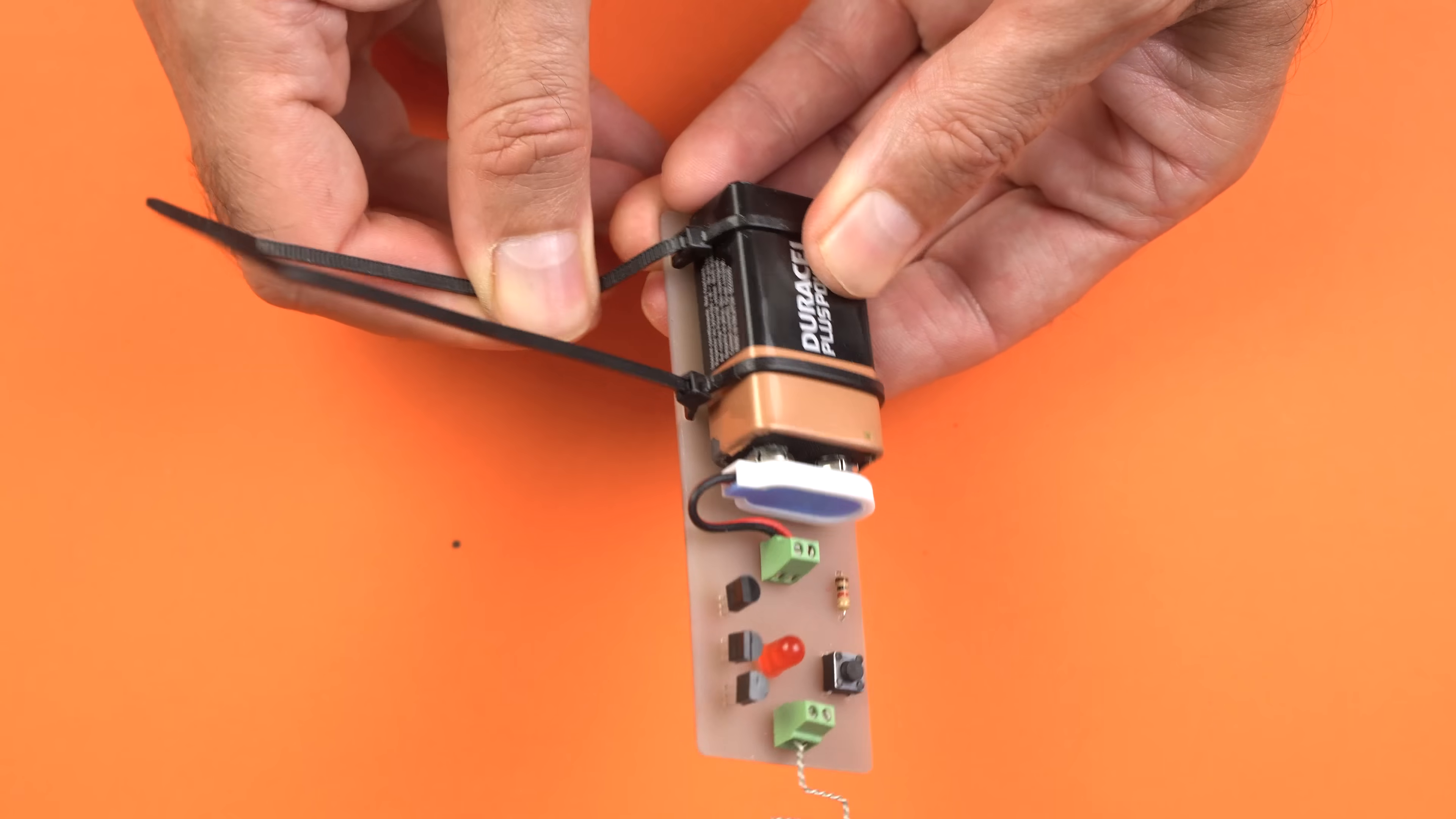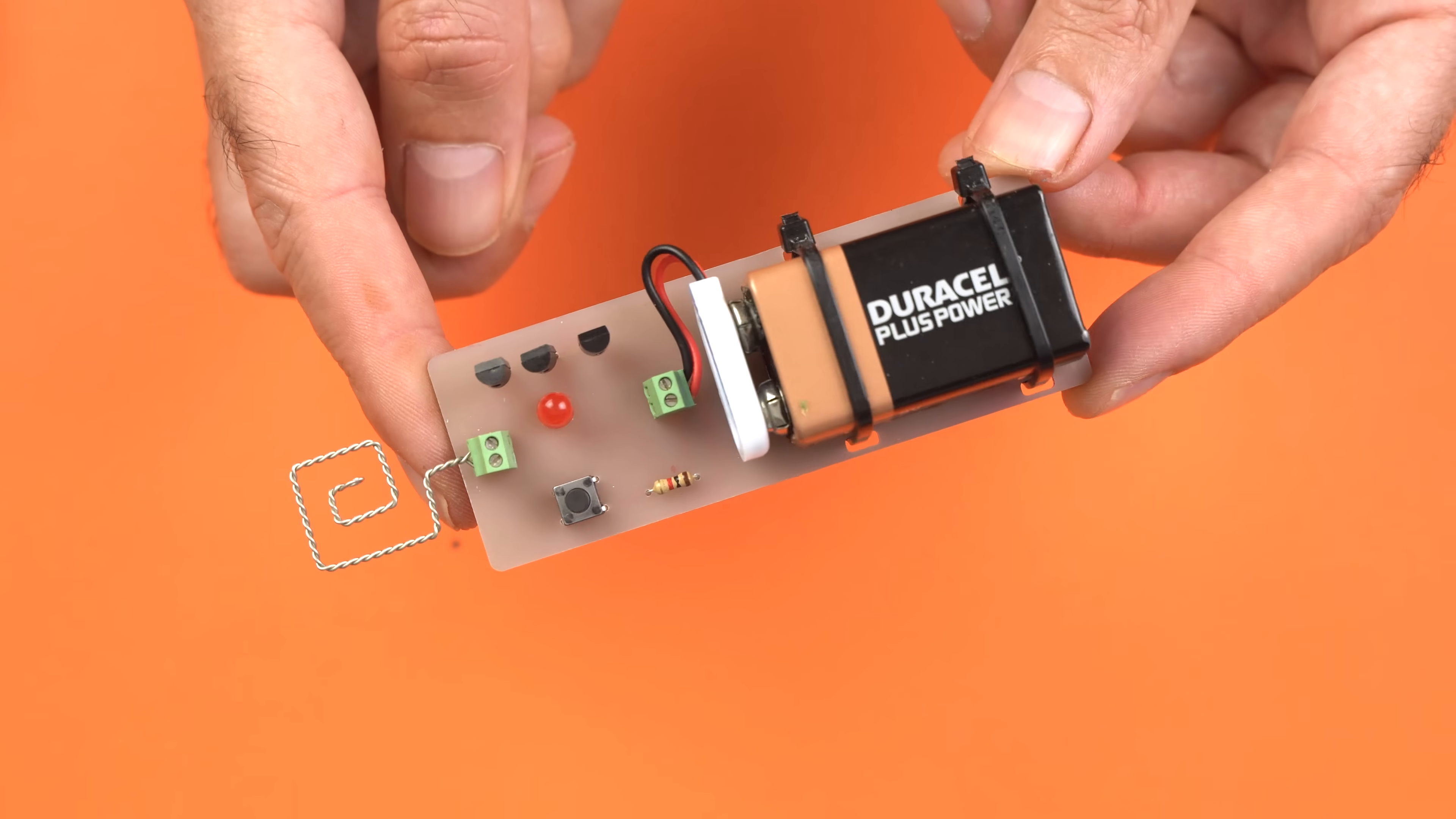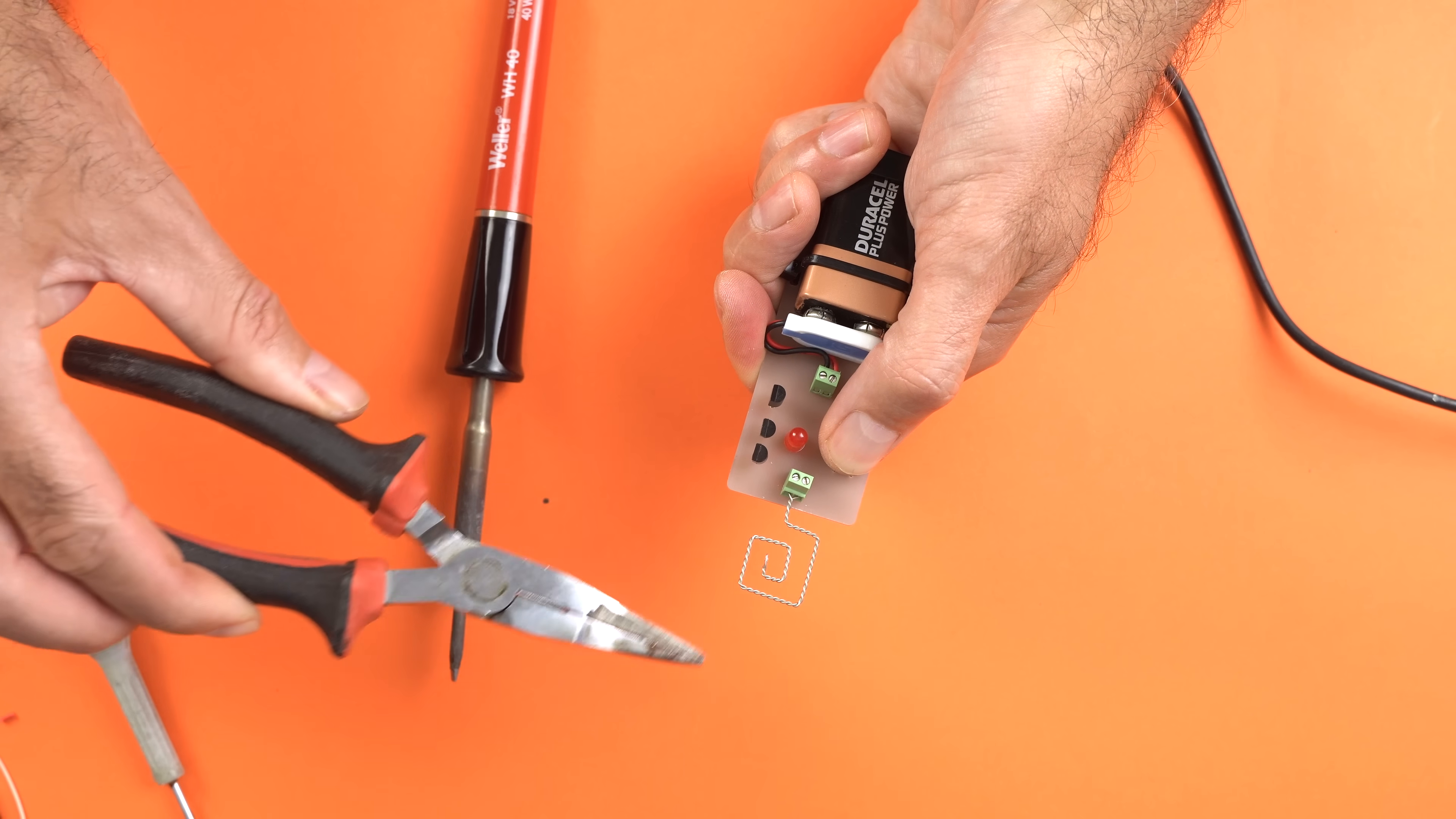The most famous way to check if a 9V battery is still charged is using your tongue. But don't do it. Even if it feels like a fizzy candy with an electric twist, it's definitely not recommended.